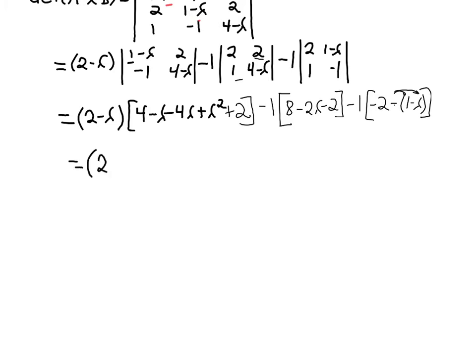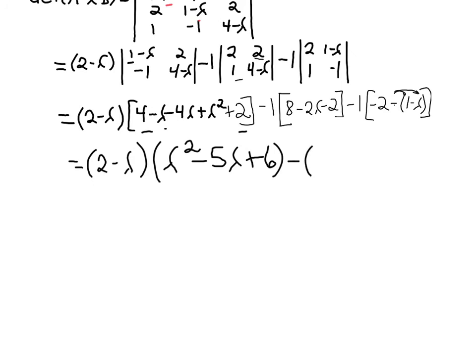So we've got (2 minus lambda) times the bracket. Combining like terms inside: lambda squared, minus lambda minus 4 lambda gives minus 5 lambda, then positive 4 plus 2 gives plus 6. Then minus: negative 2 lambda plus 6 from the second term (8 minus 2). And the last term, distributing the negative: positive lambda minus 3.